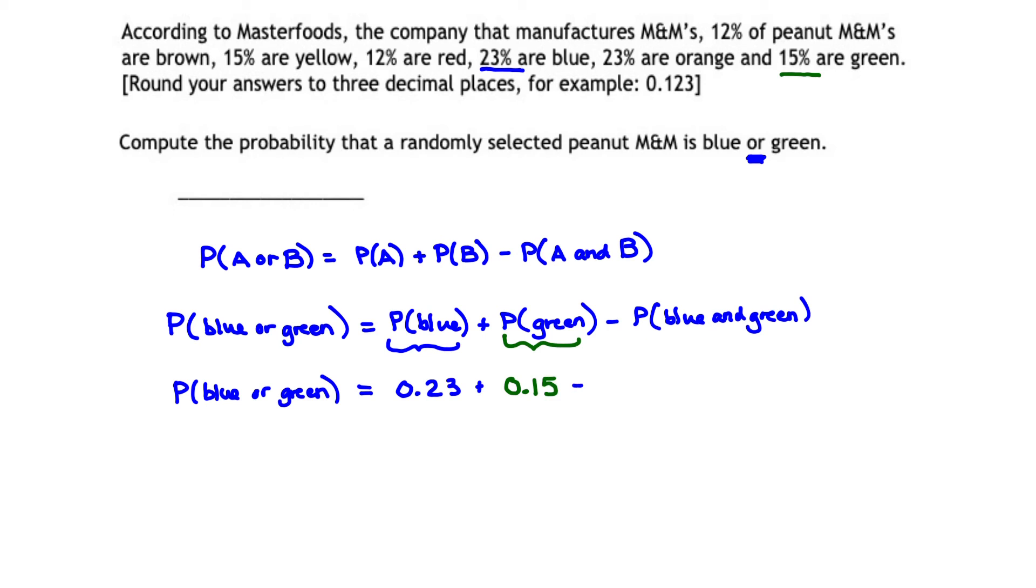Finally, the probability that the M&M is blue and green. Can you have an M&M that's both blue and green? I guess if it was misshapen or mismade with half blue and half green, but that usually never happens. So the probability that your M&M is both blue and green at the same time is actually 0.